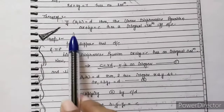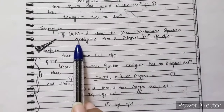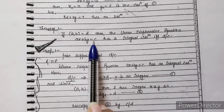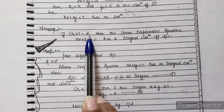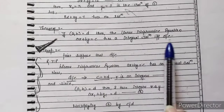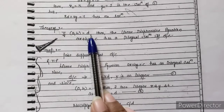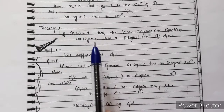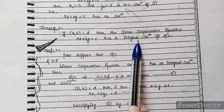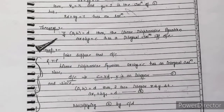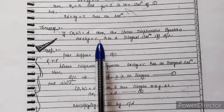Now we state a theorem. If A and B are given in the linear Diophantine equation ax plus by equals c, and if GCD of A and B is D, then if D divides C, we get an integral solution. If D does not divide C, we do not get a solution. This theorem is based on the examples we have just done.